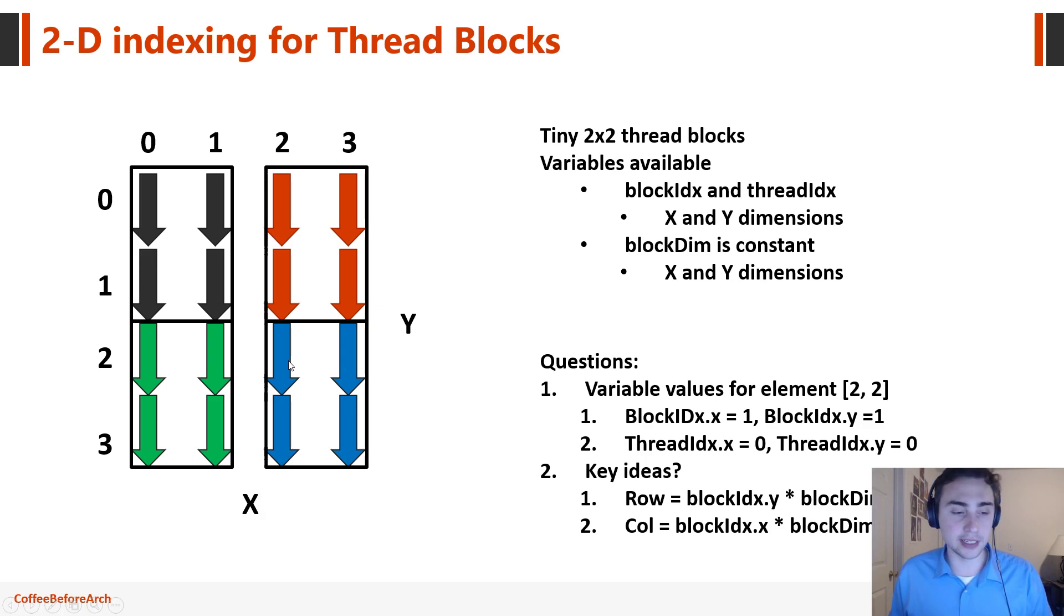So in this case this thread will be zero zero. So what's the key idea of doing this? So we can see that we can calculate the row of a specific thread and the column of a specific thread using these basic formulas. So let's just run through this example. So block idx dot y times block dim dot y, or so the row is equal to block idx dot y times block dim dot y plus thread idx dot y. So let's see if that holds true up here. So we want this thread remember.